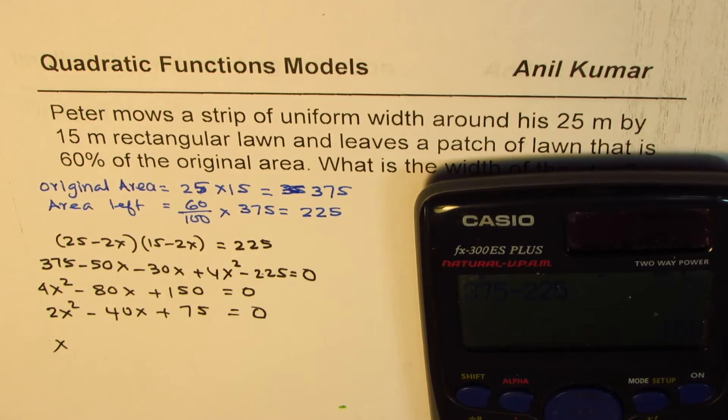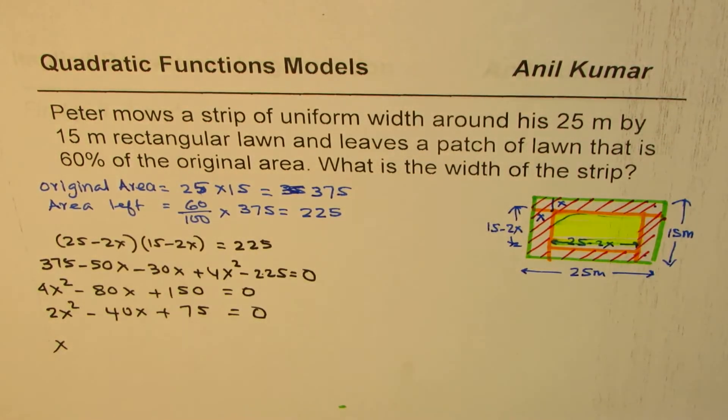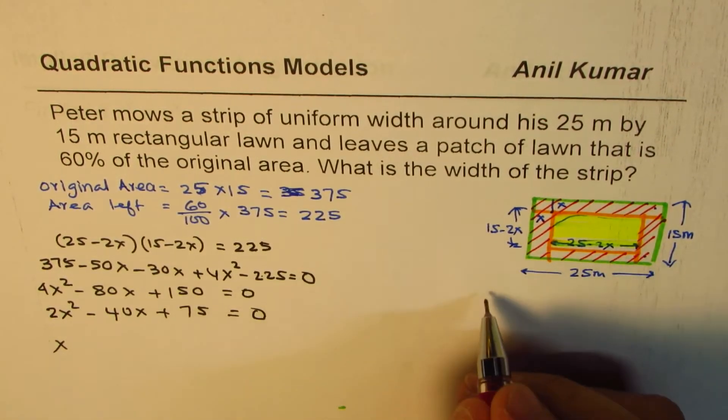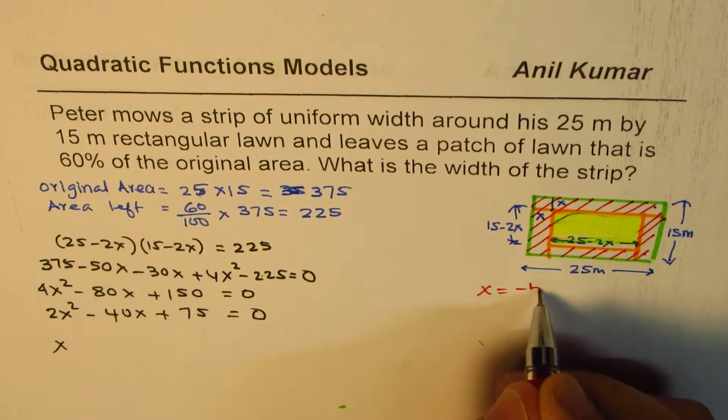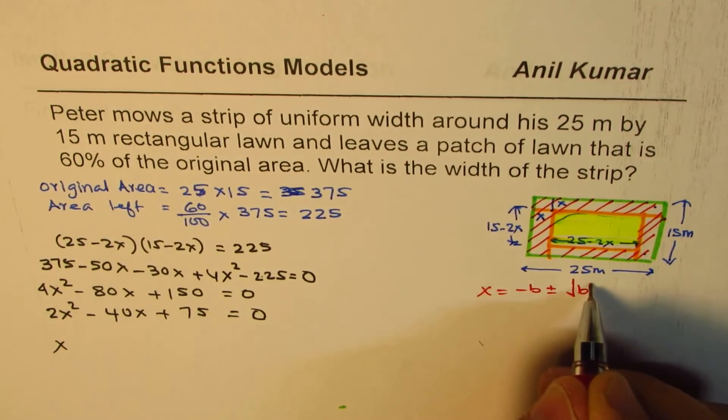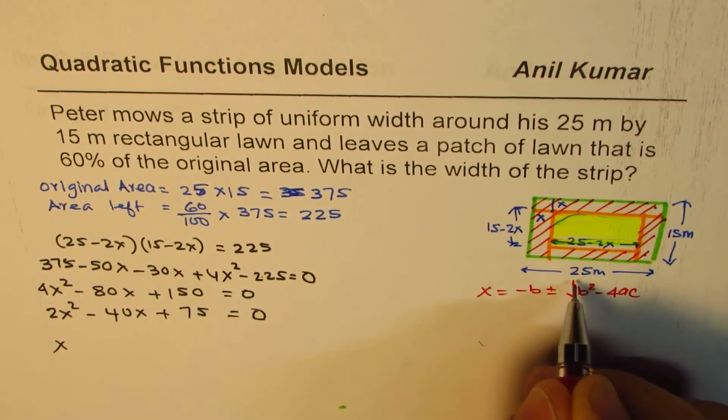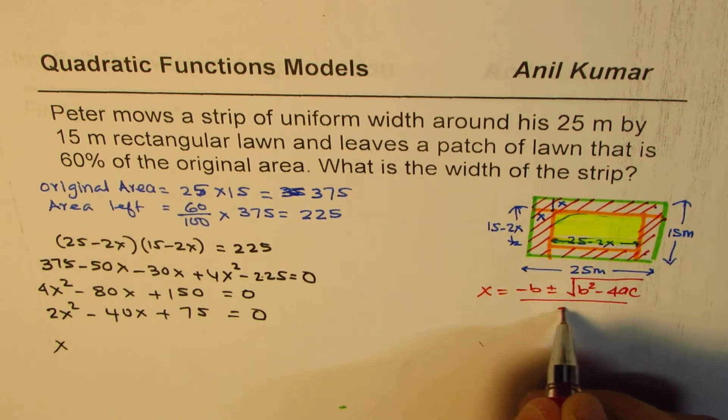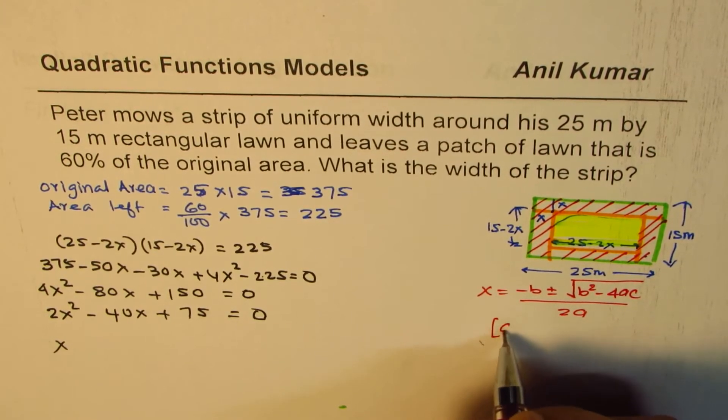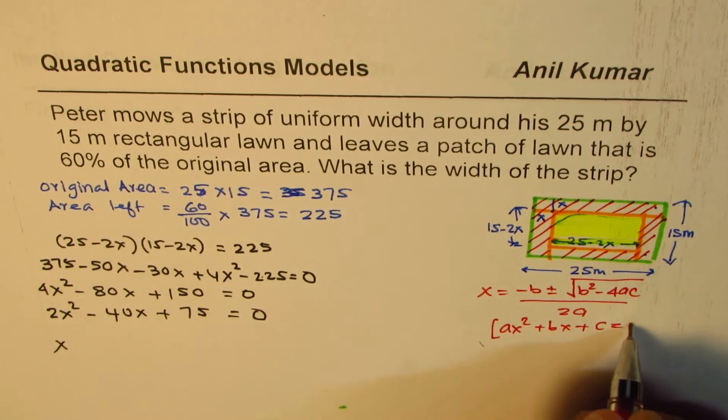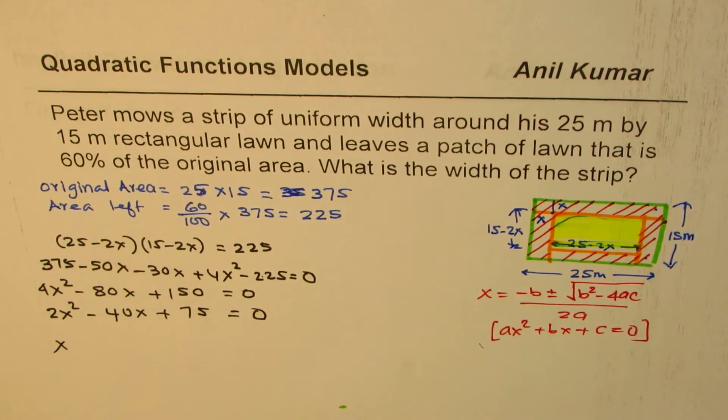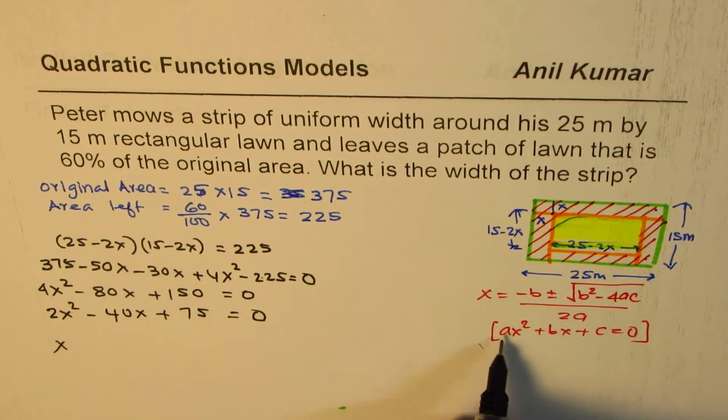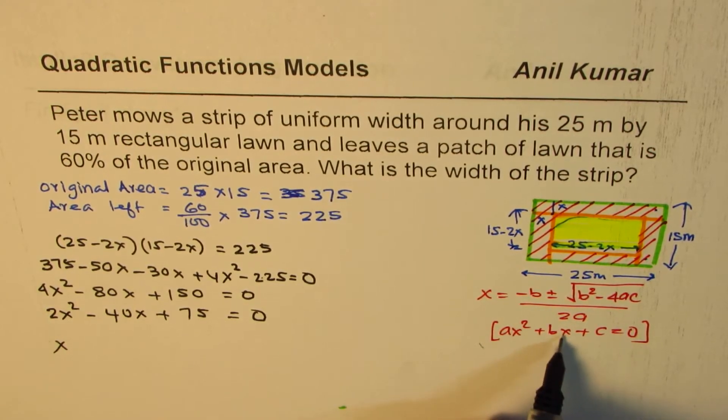Of course you know the formula: x equals minus b plus or minus square root of (b² - 4ac) divided by 2a. We're talking about an equation like ax² + bx + c = 0. Now we'll apply this equation and substitute the values of a (coefficient of x²), b (coefficient of x), and c (the constant, which is 75 for us).